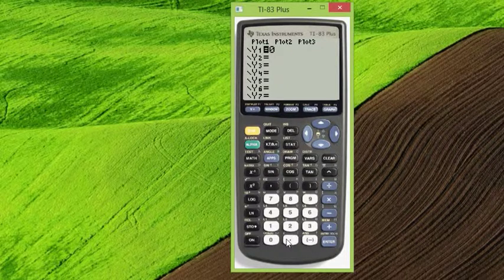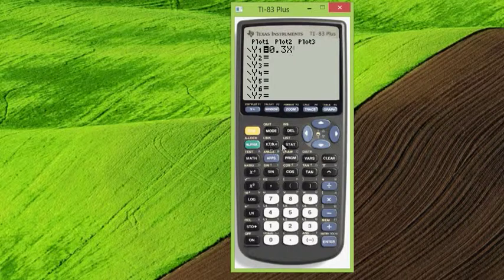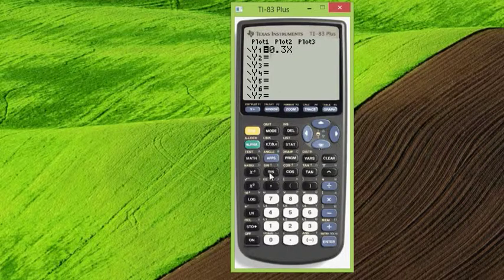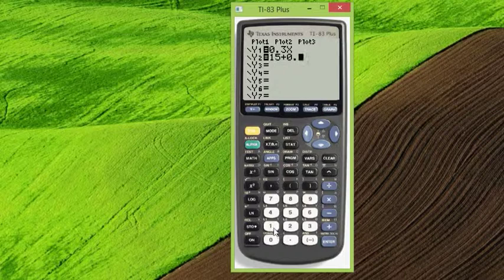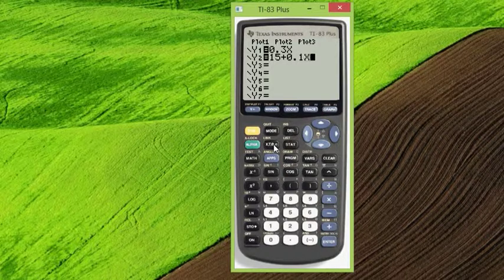So the first equation was 0.3x, that goes in y1, and then the second equation was 15 plus 0.1x.